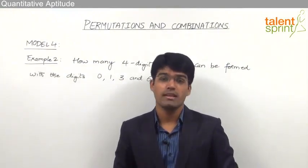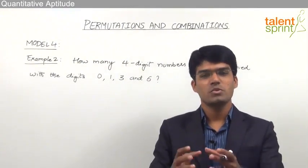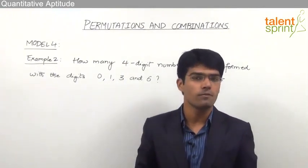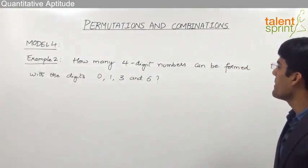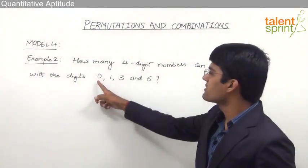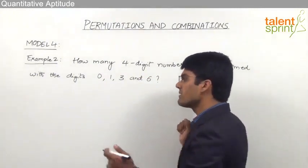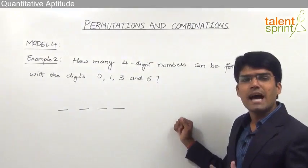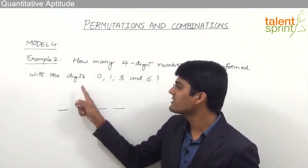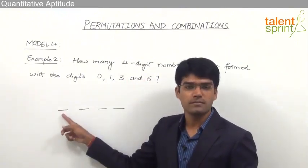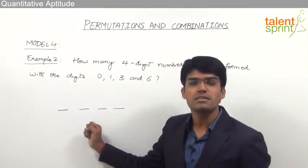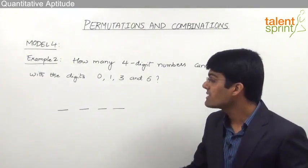Let's take the second example from model 4, which involves arrangement of digits to form numbers where one of the digits is 0. This is a special case requiring care. The question is: how many 4-digit numbers can be formed with the digits 0, 1, 3, and 6? In general with 4 digits and 4-digit numbers, one might say 4!, but if we allow 0 in the first position, that position is the thousands place, and the number would become a 3-digit number.